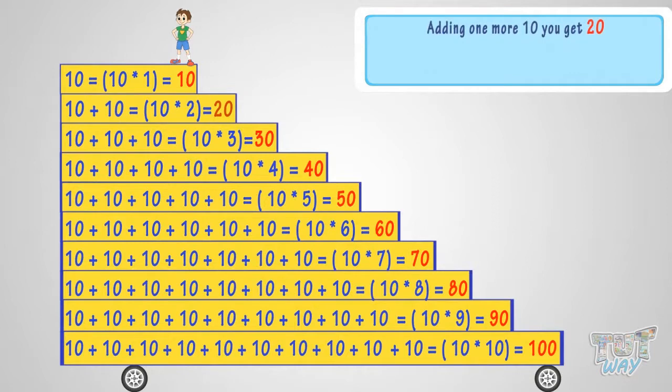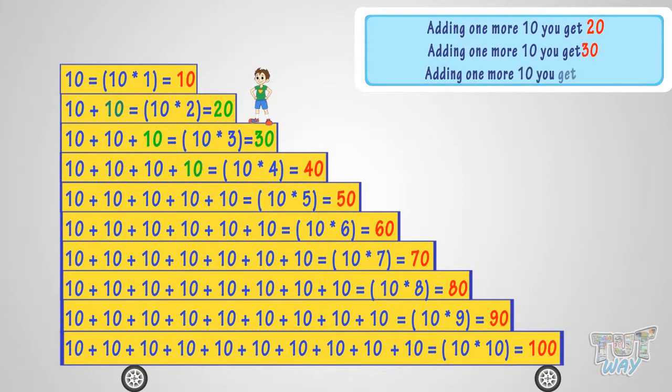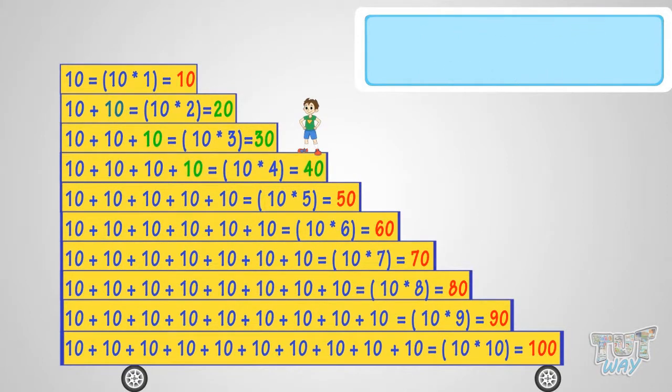Adding one more 10, you get 20. Adding one more 10, you get 30. Adding one more 10, you get 40. And so on. So, it is a step counting by 10.